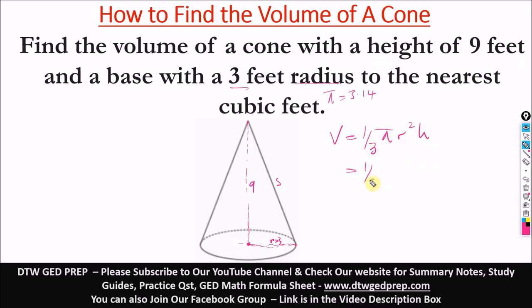So we have here 1 over 3 times 3.14 times our radius is 3 squared times our height is 9. So here, this 3 here, we'll cancel a 3 here.